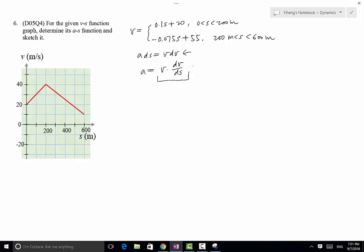For the first half, when s is between 0 and 200 meter, a equals v which is 0.1s plus 20 times dv/ds which is, according to this equation, dv/ds is simply 0.1. Therefore this equals 0.01s plus 2.